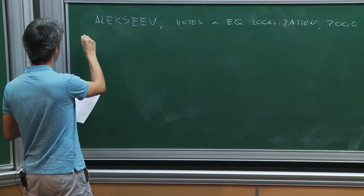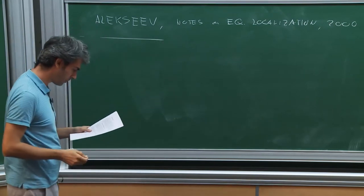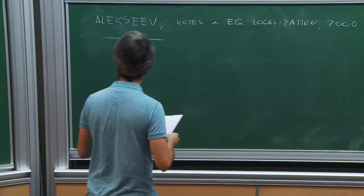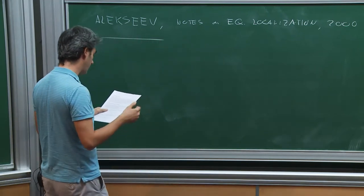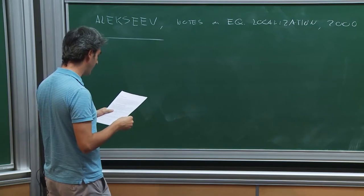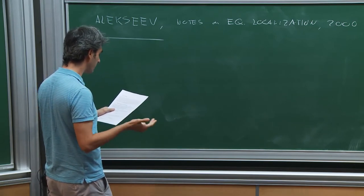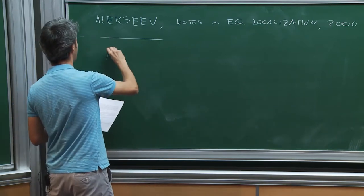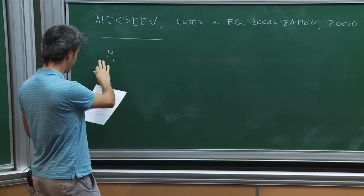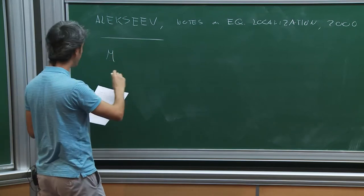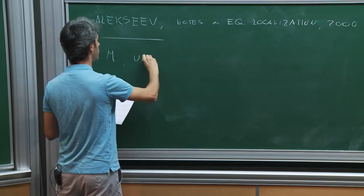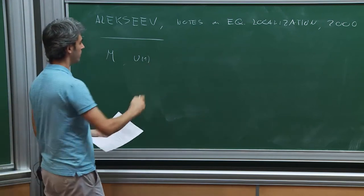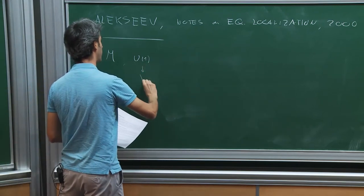The other thing that created some confusion was the story with the metric — whether we need the metric or not. In fact, the metric is a totally auxiliary element in the following sense. Suppose you start with a manifold M — and this has to be an orientable manifold — and you only start with a U(1) action on it. From this U(1) action, we get a vector field V.